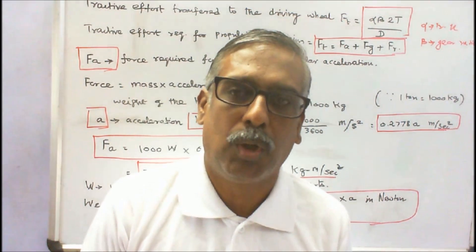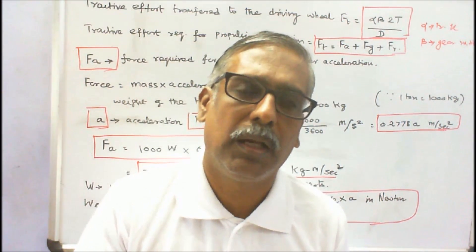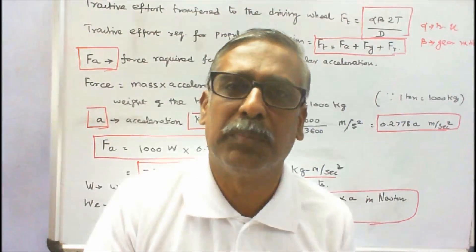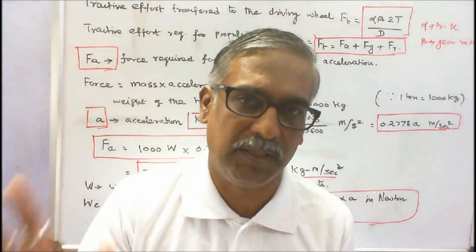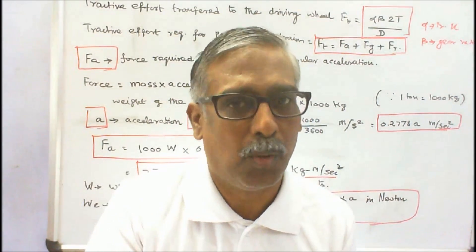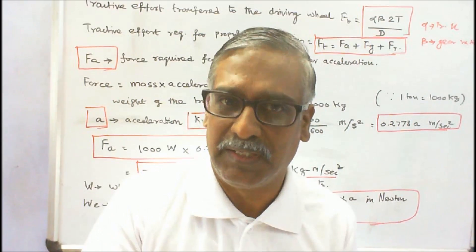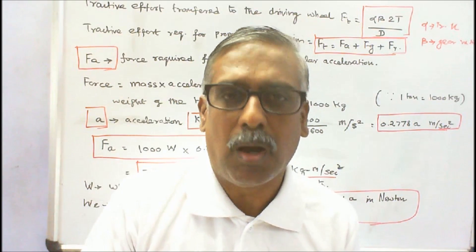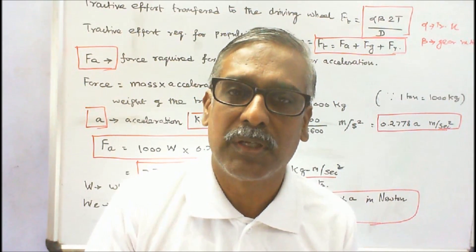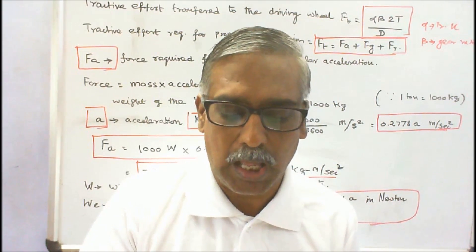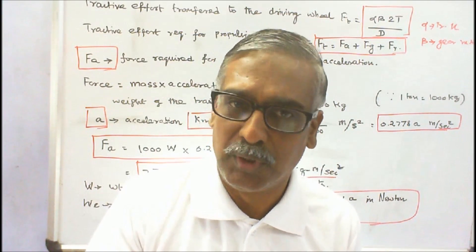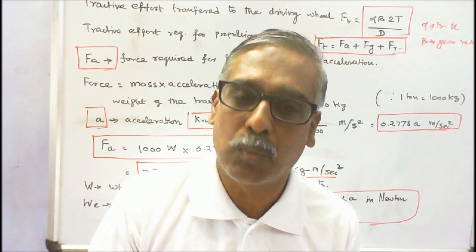This class we discuss the tractive effort required for propulsion of a train. First, what is the difference between mass and weight? Mass is the quantity of matter contained in a body, denoted by M. Mass is a scalar quantity. Weight is the force with which earth pulls a body downwards, denoted by W. Weight is a vector quantity.